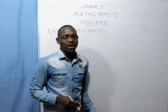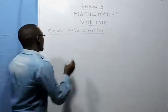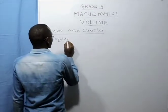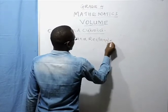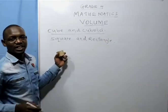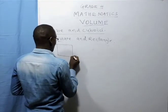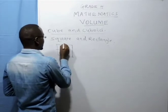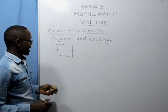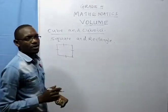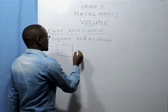How do we identify a cube and a cuboid? We are going to start here. With me I have a cube. We say that we have a square and a rectangle. A square is a figure which has all sides equal. We use marks to show that the sides are equal. So a cube is made up of 6 faces which are equal.